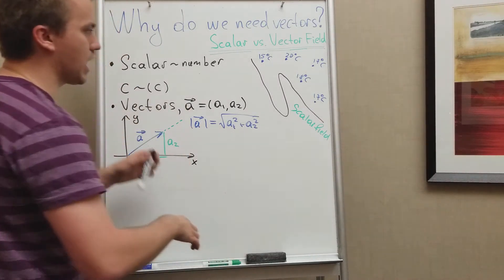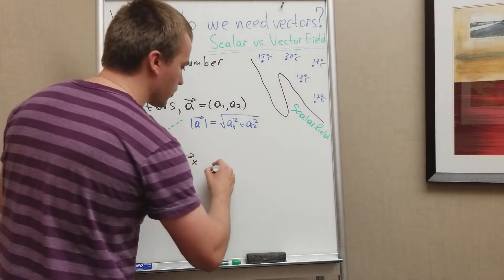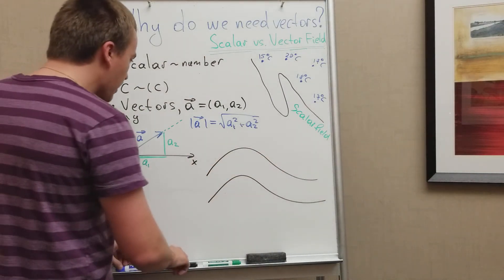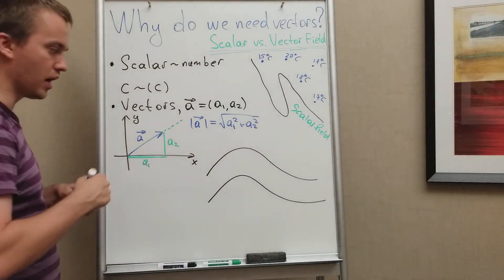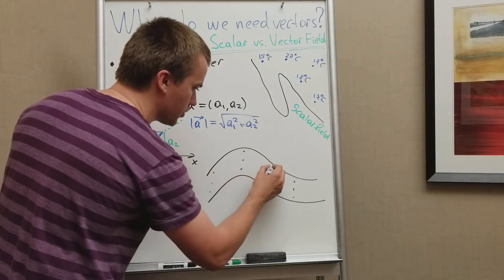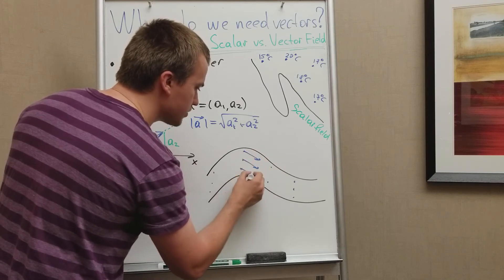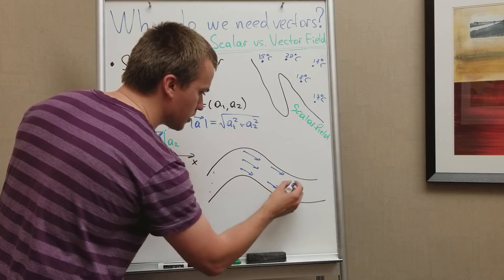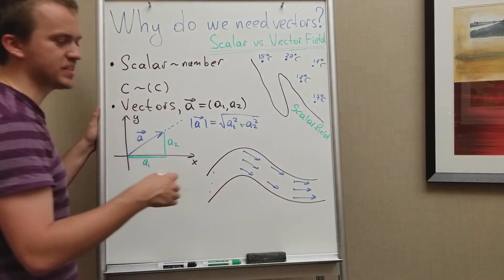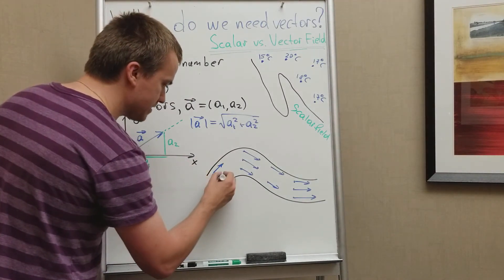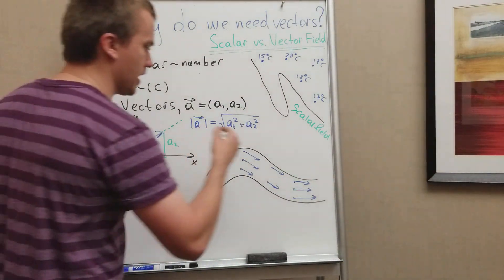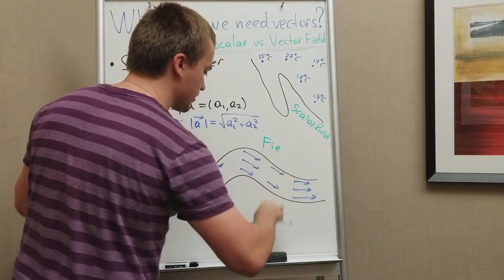For example, imagine you want to create a model of how the water flows in a river. The vector is going to be more advanced here, because you can assign each point on your model, on your space, a vector. What is that vector going to show you? The direction of the vector shows the direction of the flow, and the length of the vector shows the speed of the water. In this case, we can see that vectors are more useful for describing real-world situations — and this is called a vector field.